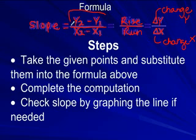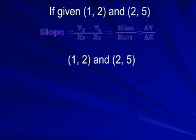So all you need to remember is this formula, y2 minus y1 over x2 minus x1. So once we have this formula, these are the steps we're going to take. Take the given points and substitute them into the formula above. We've done that before, we're just substituting numbers in for the variables. Number two, complete the computation, and then number three, check the slope by graphing the line if needed. So let's begin.